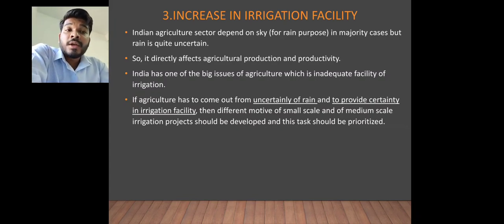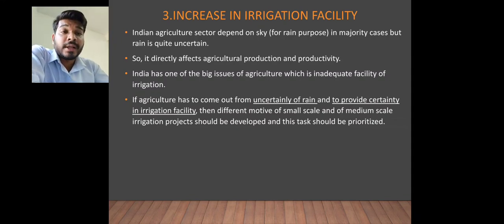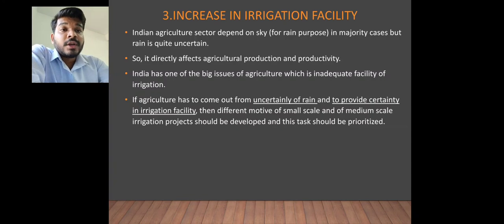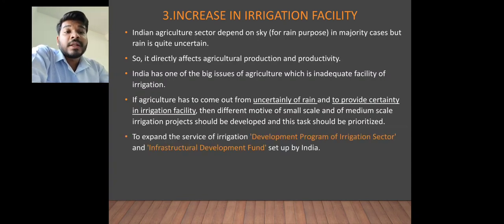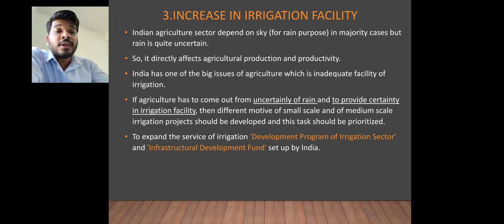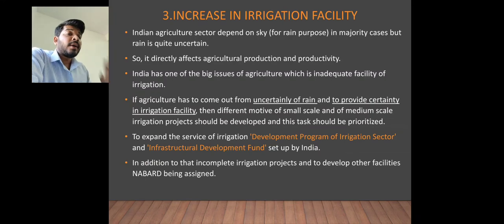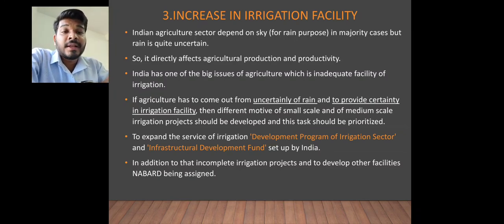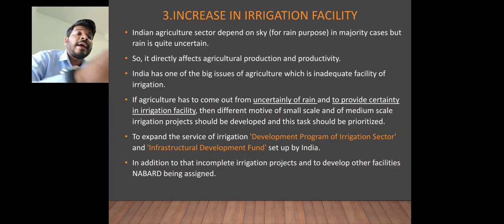Different irrigation projects were built to supply water to all hectares of land turn by turn. Priority was given to rural areas so poor farmers receive water on time. Two specific programs were set up: the Development Program of Irrigation Sector and the Infrastructural Development Fund. To fund these irrigation projects, NABARD was assigned to channel money directly to these organizations and farmers.